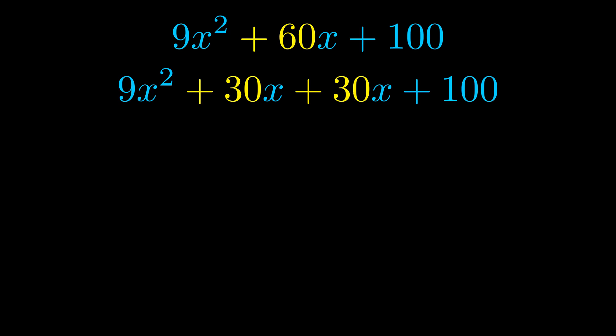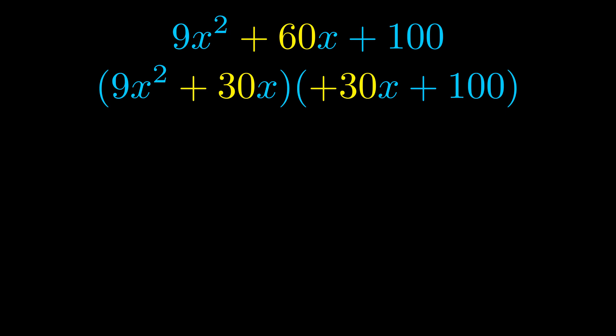Once we've done this we go ahead and put parentheses around the first term and the last term. And we do that so that we can take the greatest common factor out of both terms. We can see the greatest common factor is now outside in green.